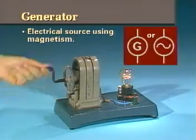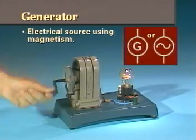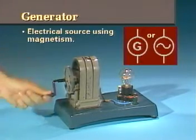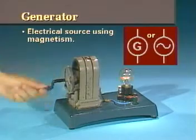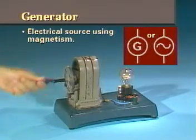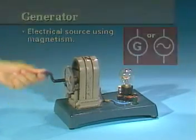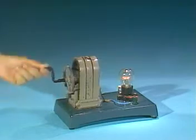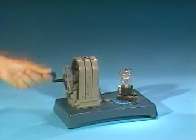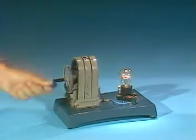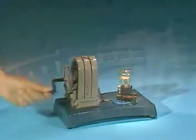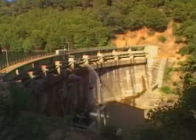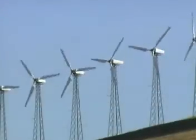Here are two schematic symbols used to represent a generator. Movement between the wires and magnetic fields inside a generator produces the electric power. A generator may be hand-cranked, but most are powered by steam turbines, water power, or even wind power.